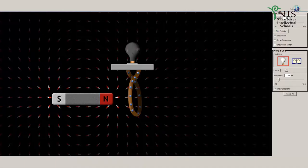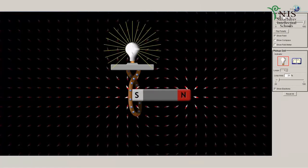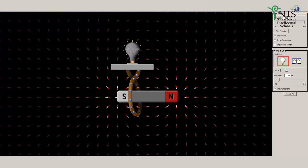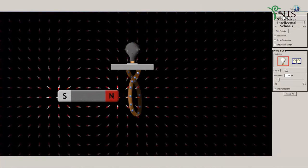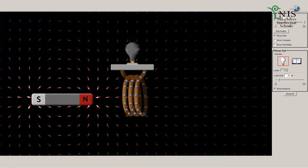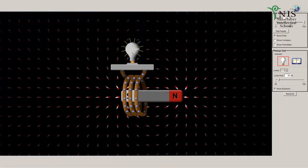If a magnet of greater strength is used, the current produced is greater. Now I increase the strength of the magnet to 100% and, moving our bar magnet slowly through the loop, we can observe that the current increases as our lamp shines brighter. If we increase the number of turns of the loop, you can see that even moving the bar magnet not so fast, the lamp shines brighter by a greater amount.